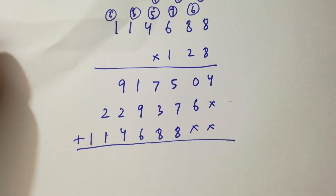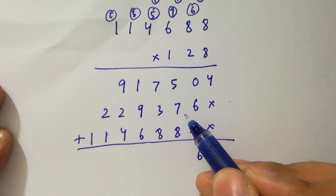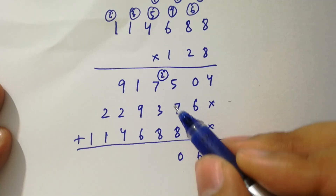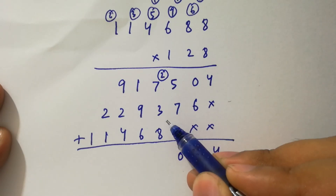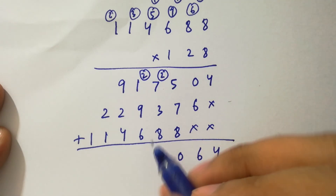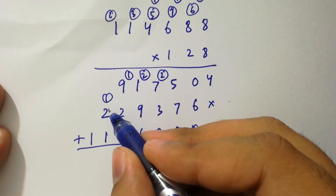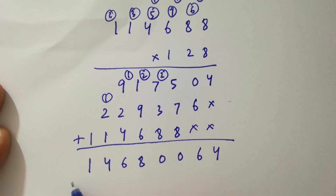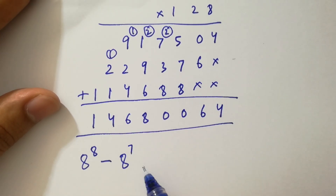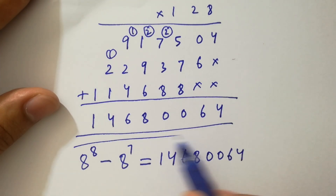Now add them. We have 4 as it is. 0 plus 6 is 6. Next, 5 plus 7 is 12, 12 plus 8 is 20, write 0 carry 2. 2 plus 7 is 9, 9 plus 3 is 12, 12 plus 8 is 20, write 0 carry 2. 2 plus 1 is 3, 3 plus 9 is 12, 12 plus 6 is 18, write 8 carry 1. 9 plus 1 is 10, 10 plus 2 is 12, 12 plus 4 is 16, write 6 carry 1. 2 plus 1 is 3, 3 plus 1 is 4. And 1 as it is. So finally, 8 to the power 8 minus 8 to the power 7 equals 14,680,064, which is our final answer.